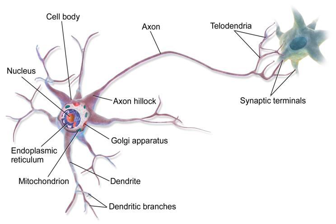A typical neuron consists of a cell body, soma, dendrites, and a single axon. The soma is usually compact. The axon and dendrites are filaments that extrude from it. Dendrites typically branch profusely, getting thinner with each branching, and extending a few hundred micrometers from the soma. The axon leaves the soma at a swelling called the axon hillock, and travels for as far as one meter in humans or more in other species.